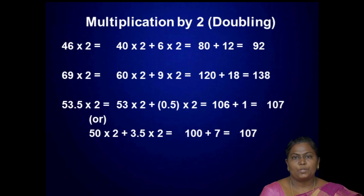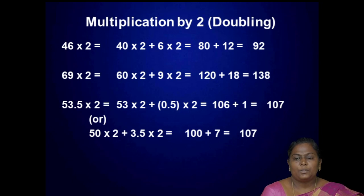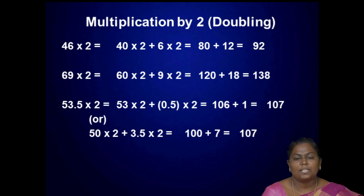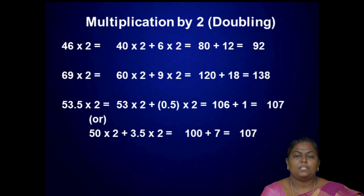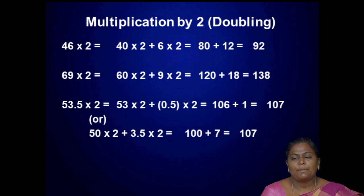First, multiplication by 2. Given number 46 into 2, which is equal to 40 into 2 plus 6 into 2, that is 80 plus 12 which is equal to 92. For example, 69 into 2 means 69 can be split into 60 plus 9, so 60 into 2 plus 9 into 2 that is 120 plus 18 which is equal to 138.